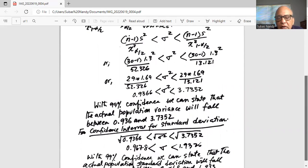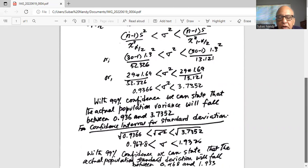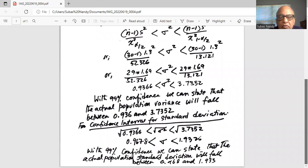What do these two numbers mean? With 99% confidence we can state that the actual population standard deviation will fall between 0.968 and 1.933. So I'll stop here today. If you have any questions please write me a comment and I'll